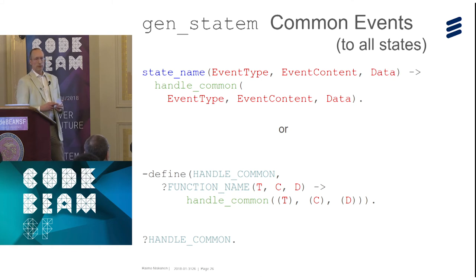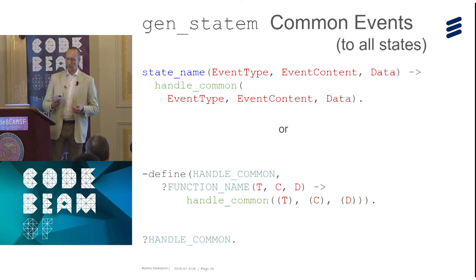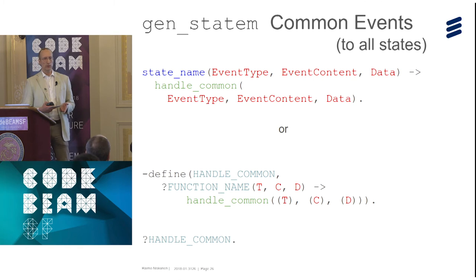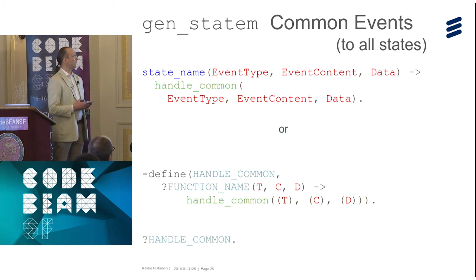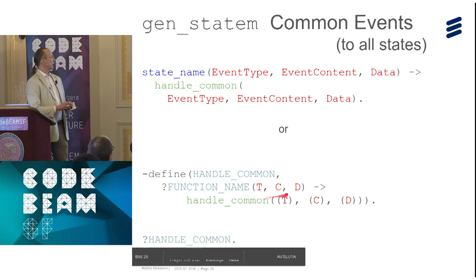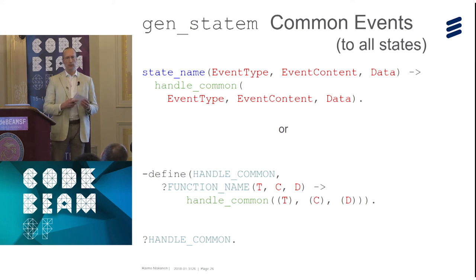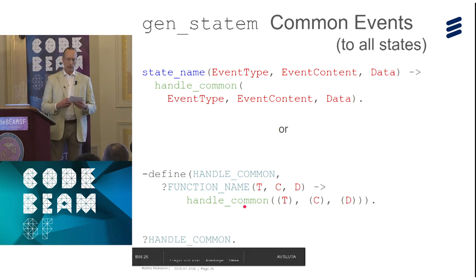How to handle common events? gen_fsm tried but failed. When you have the handle_event_function callback mode — one callback function — this is not a problem; you just handle it where you like. But when you have state-specific callbacks, you generally end up writing a final clause that calls one function of your own to handle all common events. A nice pattern is to use a macro with the function name macro so that these three lines become one. Since there are often many states, this becomes more worthwhile.